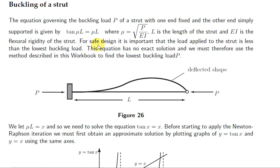The equation governing the buckling load P of a strut with one end fixed and the other end simply supported is given by tan mu L equals mu L, where mu is equal to root P over EI, L is the length of the strut, and EI is the flexural rigidity of the strut.